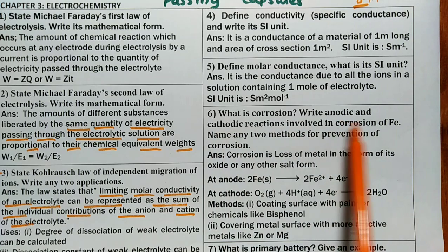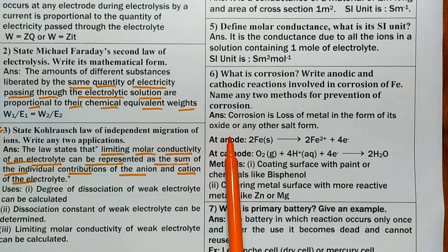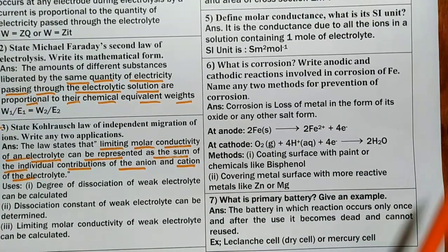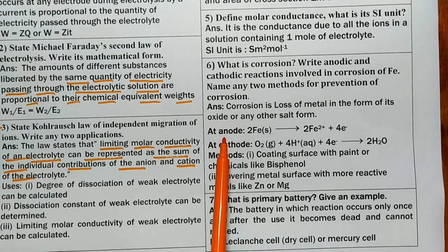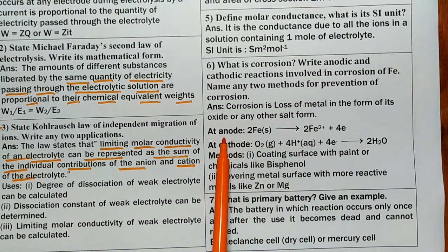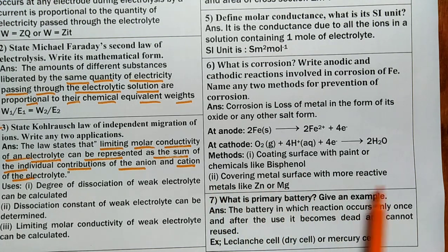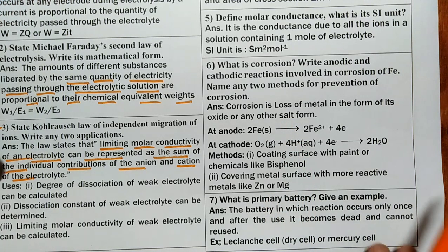What is corrosion? Write anodic and cathodic reactions and name any two methods of prevention. Corrosion is the loss of metal in the form of its oxide or other salts — generally the loss of iron in the form of oxide. Anodic reaction: Fe → Fe²⁺ + 2e⁻ (oxidation). Cathodic reaction: O₂ + 4H⁺ + 4e⁻ → 2H₂O (reduction). Methods of prevention: coating the surface with paint or chemicals like bisphenol, or covering the metal surface with more reactive metals like zinc or magnesium.